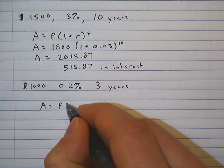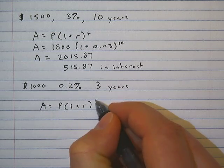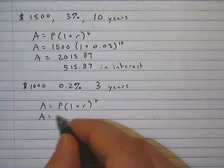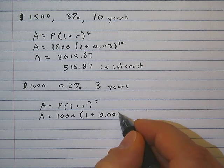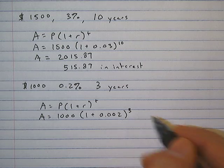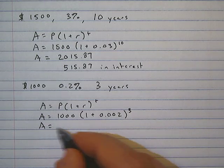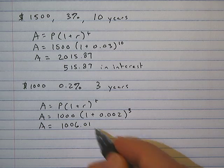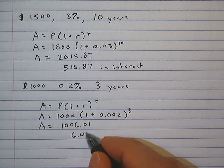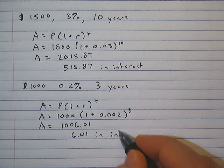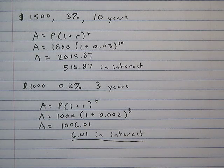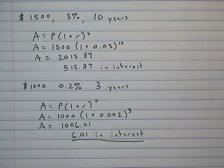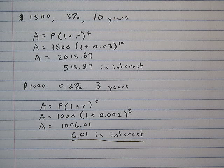A equals P times (1 plus r) to the t power. A equals 1000 times (1 plus 0.002) to the third power. Our amount comes out to $1,006.01, so we made $6.01 in interest. That is much more realistic to what you would make in a savings account right now. Well, that's compound interest.